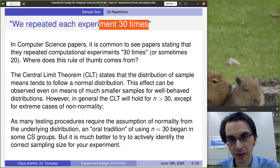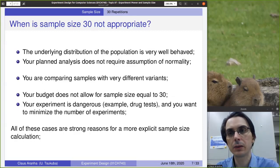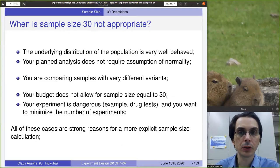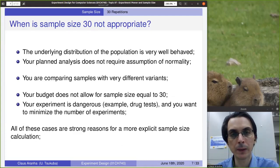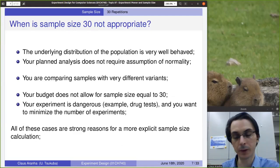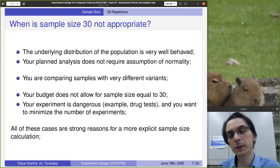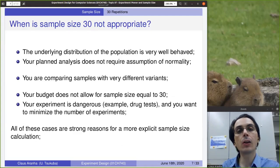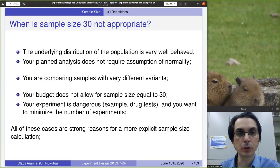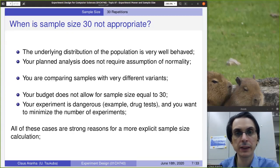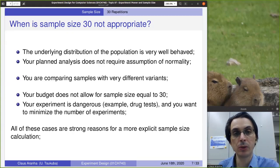Does this mean we have to use 30? There are some cases where 30 is not the right value. For example, if the underlying distribution is very well behaved — like a uniform distribution — you don't need 30; you can get the normality assumption from a much lower value. Also, if you're doing a statistical test that does not require the underlying distribution to be normal, the rule of thumb of 30 repetitions does not apply, since 30 is to guarantee the CLT will work.